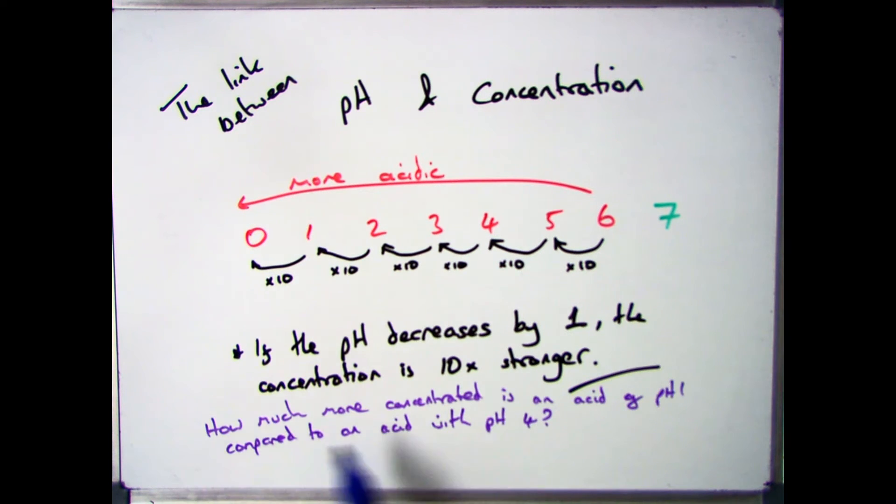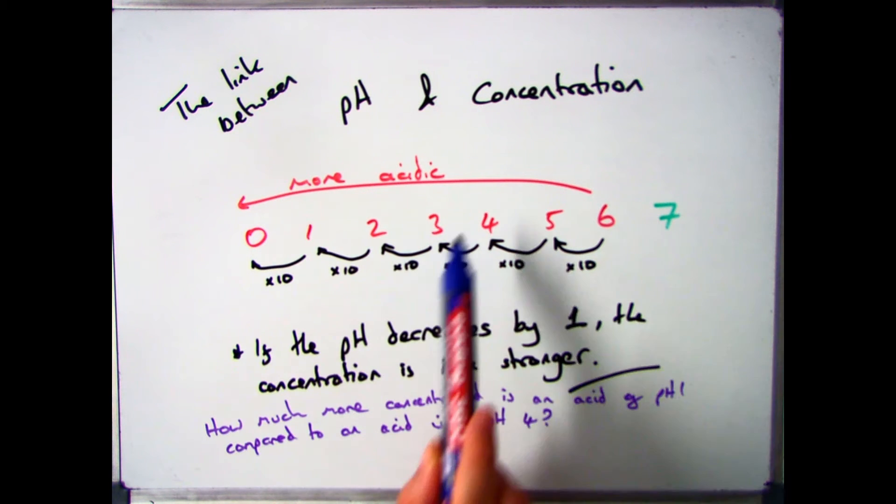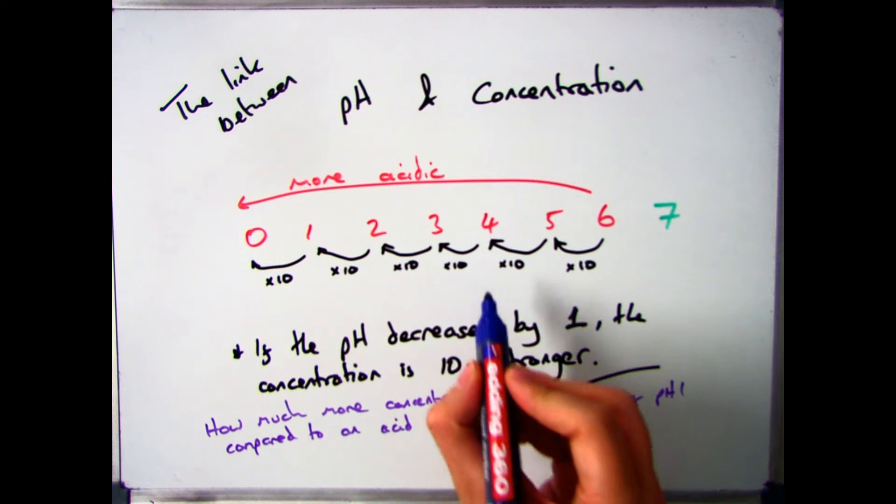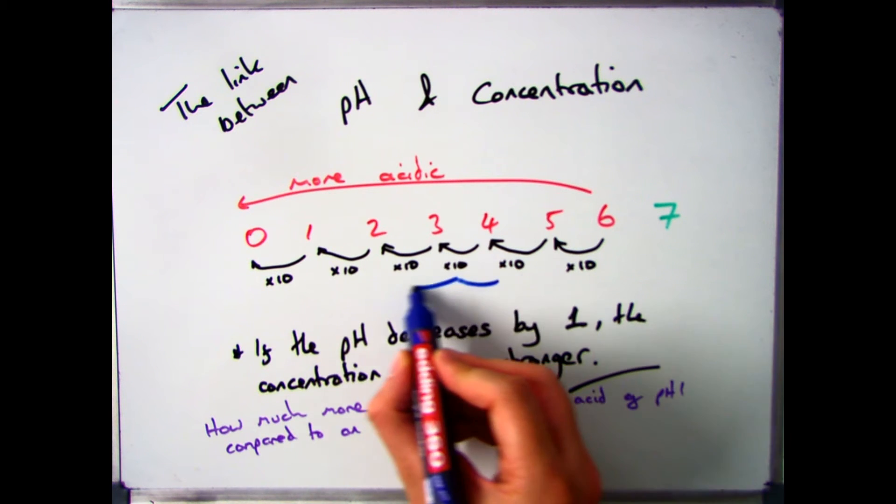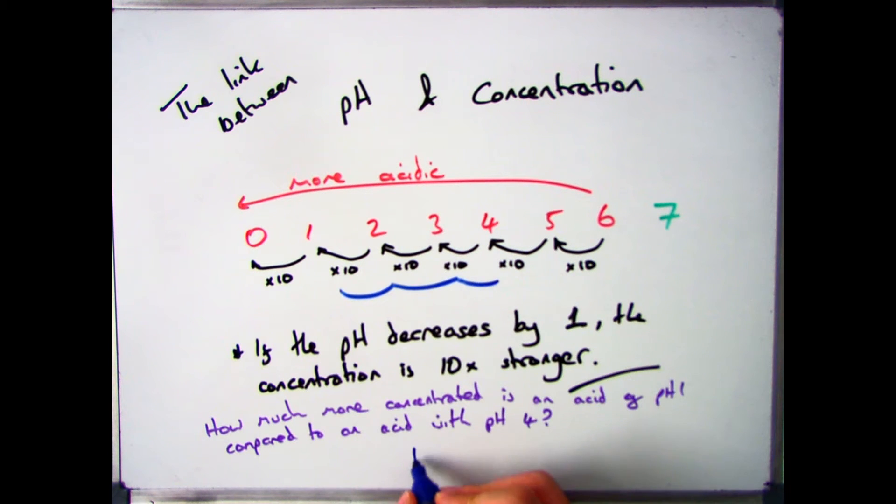The question you might get is, how much more concentrated is an acid of pH 1 compared to an acid of pH 4? So if you get this question, what I do is I draw out, as I've done here, and then have a look at how many steps there are between 4 and 1.